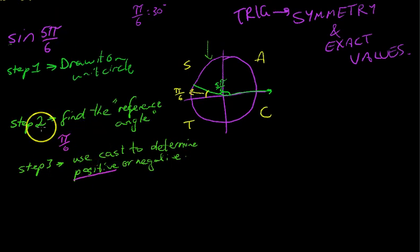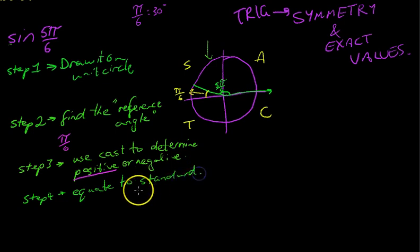Now, all of this work has gone into writing something very simple here. Step 4: Equate to standard. What I mean by that, we can now equate sine 5π/6 to something that we can work out with our standard triangles. Sine 5π/6 is equal to sine π/6. Now, this step 3 here determined that it was positive, so I don't have to put a negative out here.